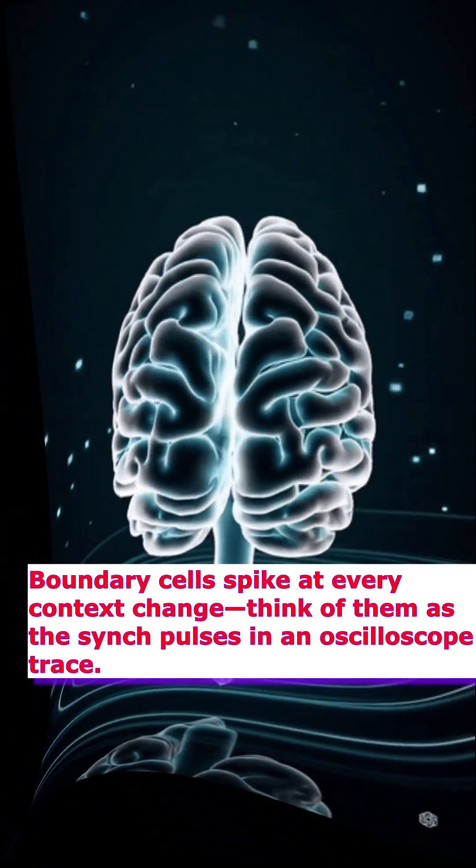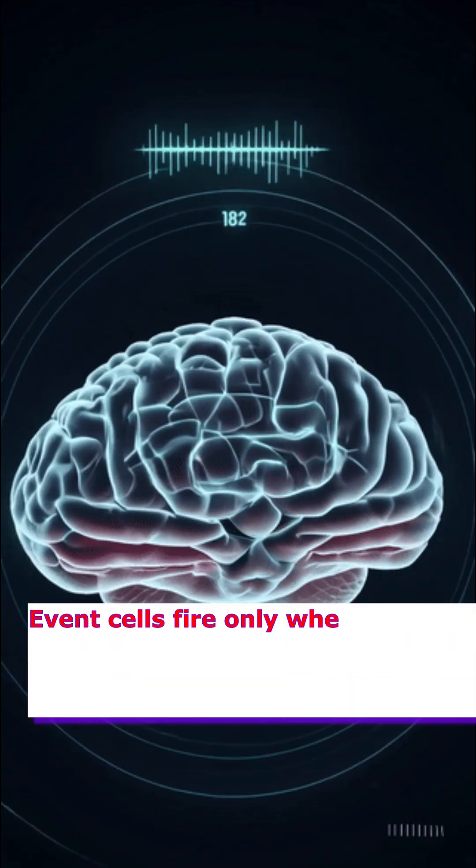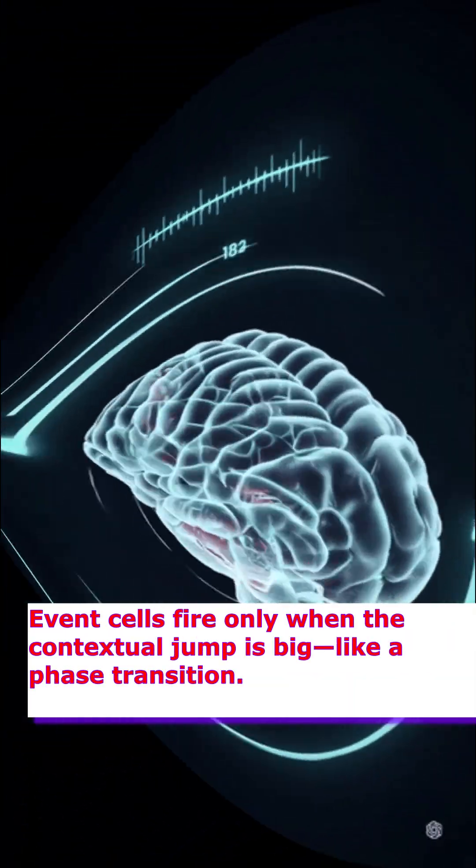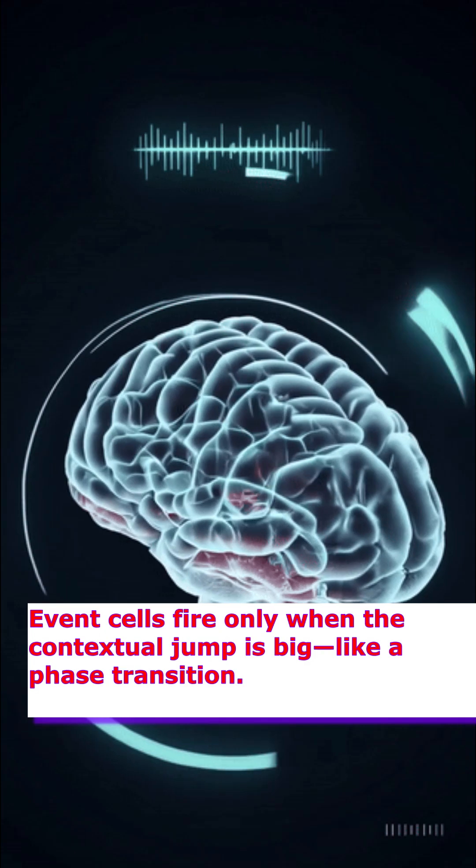Think of them as the synch pulses in an oscilloscope trace. Event cells fire only when the contextual jump is big, like a phase transition.